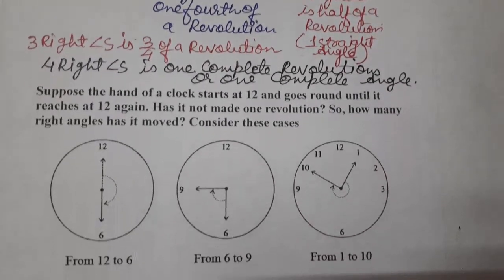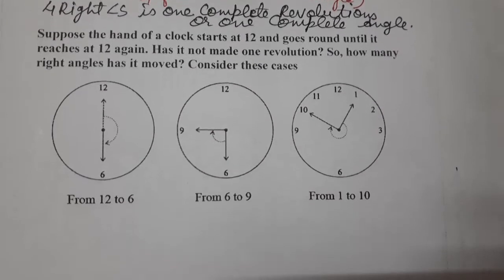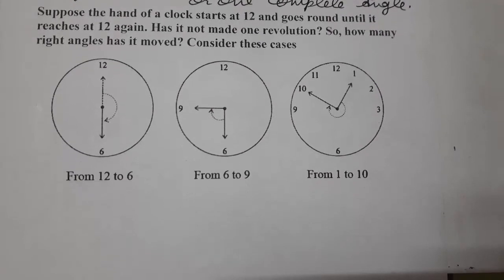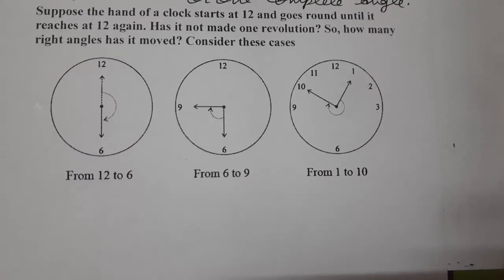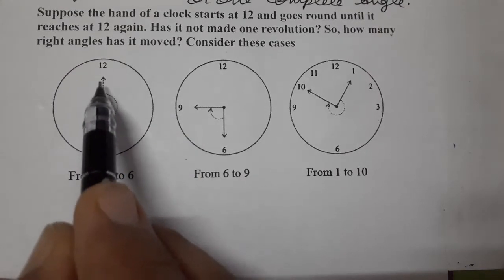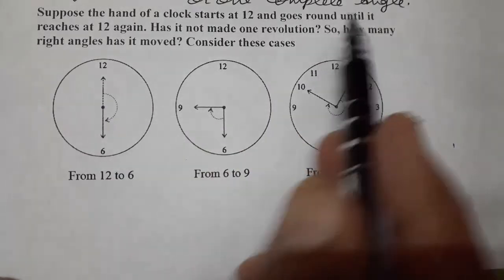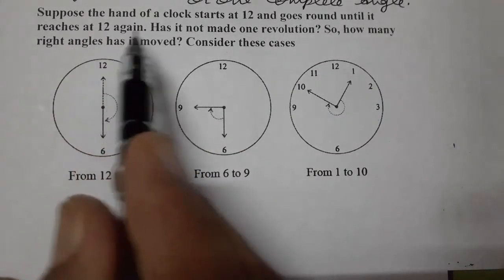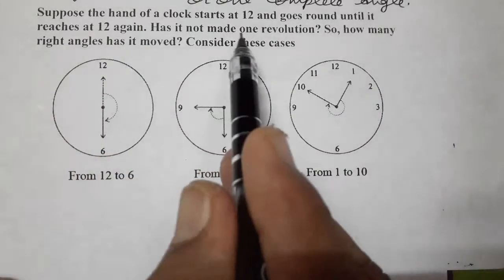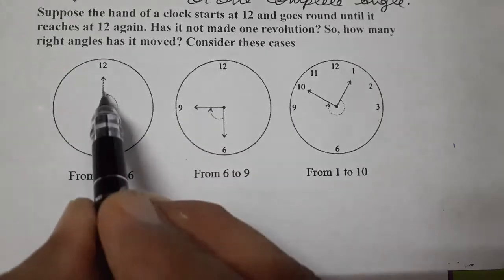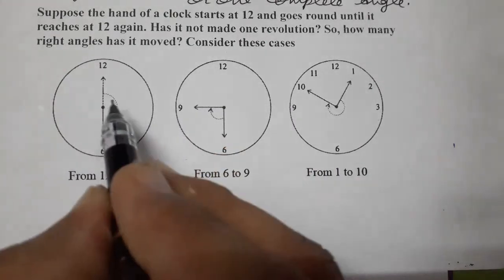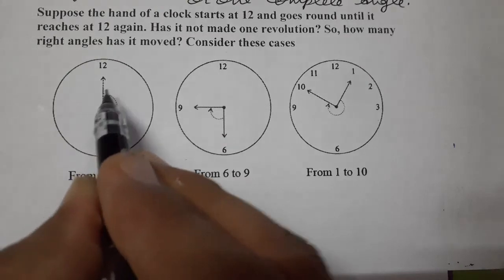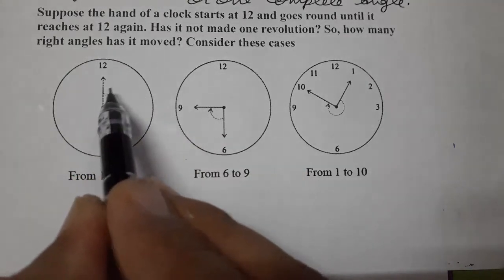Now, same in terms of a clock also. Suppose the hand of a clock starts at twelve and goes round until it reaches twelve again. The clock starts at twelve and goes round until it reaches twelve again — has it not made one revolution? Yes, it made one revolution, twelve to twelve. So twelve to twelve — how many revolutions? One complete revolution.